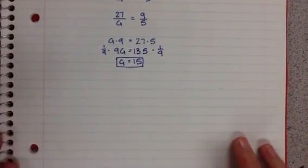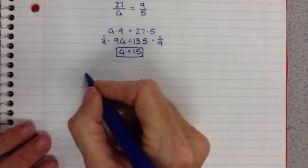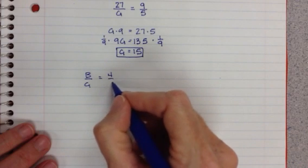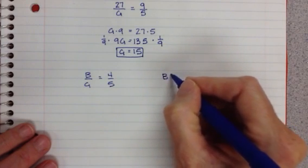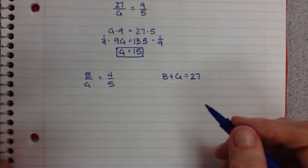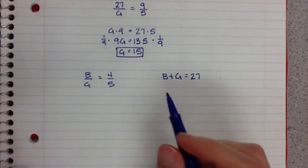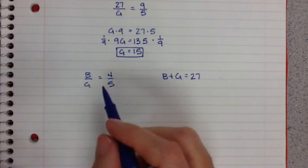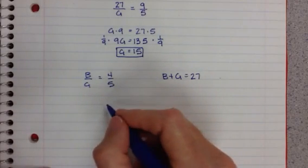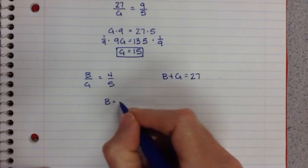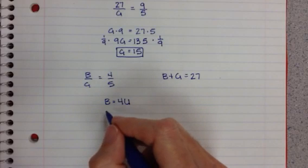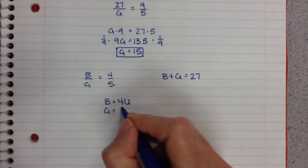Let's take a look at another way. So if boys to girls is equal to 4 over 5, and we know that boys plus girls is equal to 27. Well, if we go back to the first video, we determine that B is equal to 4 times U, and G is equal to 5 times U.